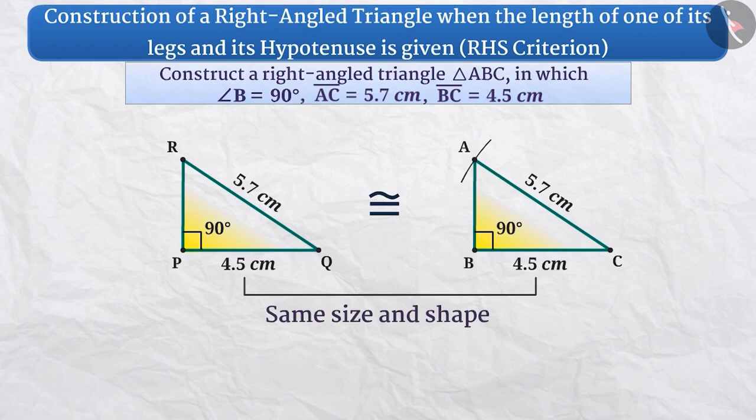That is, both the triangles are of the same size and shape which means triangle RPQ and triangle ABC are congruent. Thus, we can say that by using the RHS criterion, we get a unique triangle.